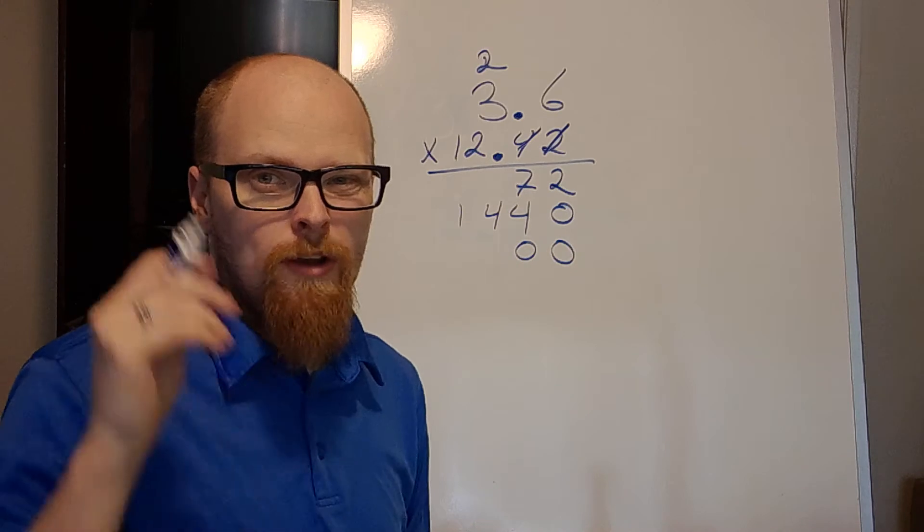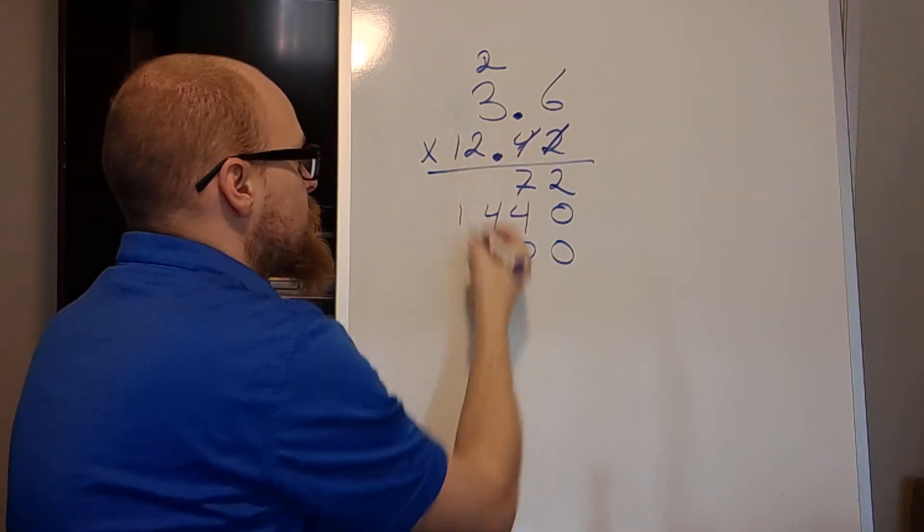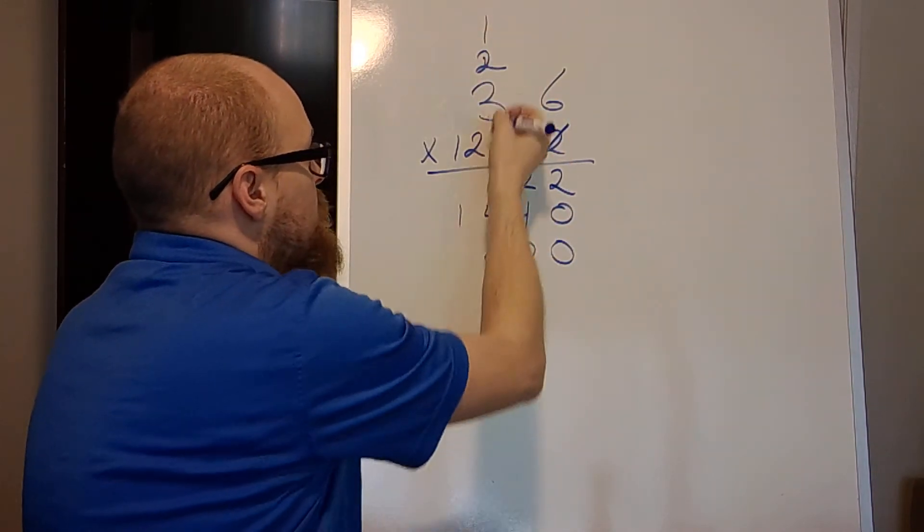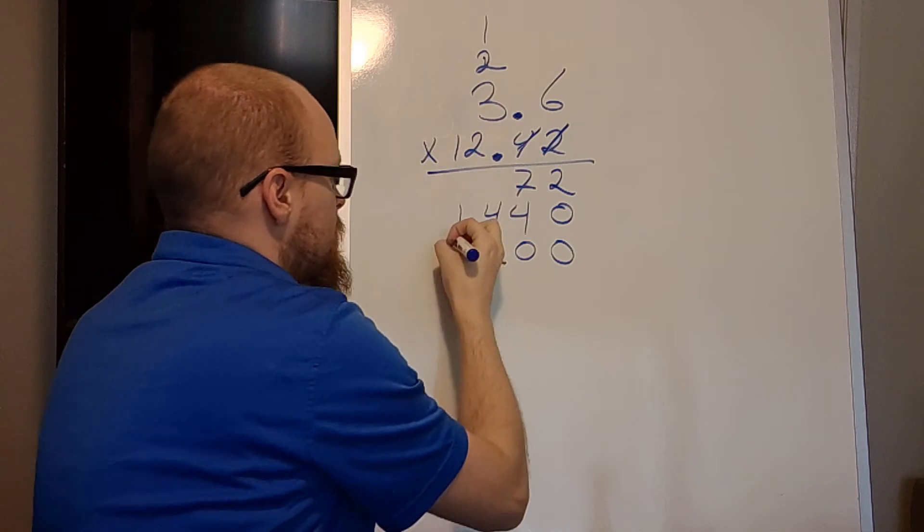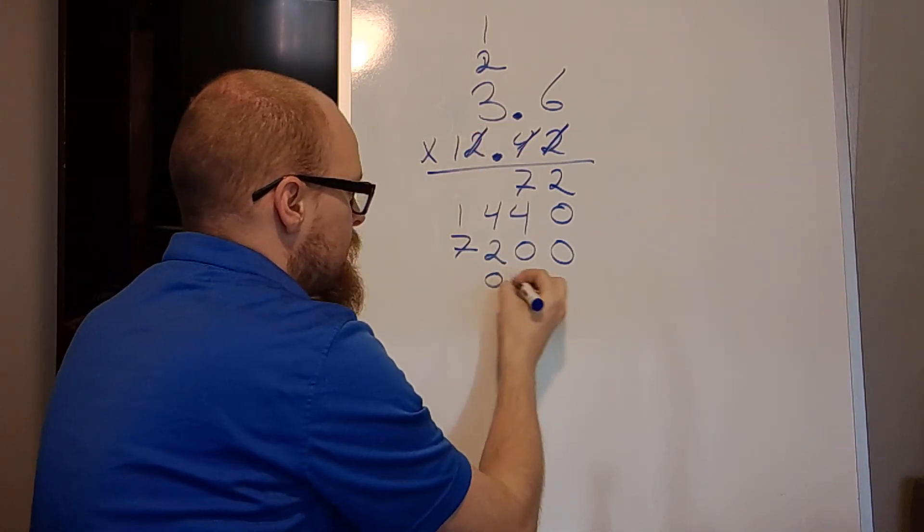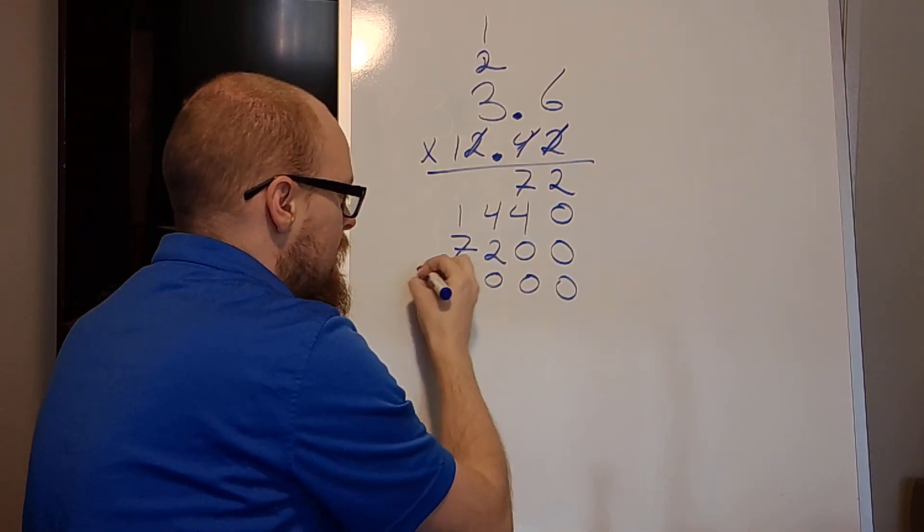Which is why ideally you want to put the small number on the bottom, so you don't have to do as many of these. 2 times 6 is 12. Add a 1 again. 2 times 3 is 6, plus 1 is 7. I'm done with that number. Bring my 0 down. And then I have 1, so I know I'm going to have a 6 and a 3.